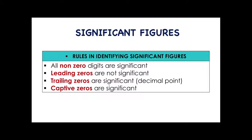Next, trailing zeros are significant. When we say trailing zeros, these are zeros after a non-zero digit. But take note: trailing zeros are significant only if the digits have a decimal point. If there is no decimal point, then that trailing zero is not a significant digit. And lastly, captive zeros are significant. When we say captive zeros, those are zeros that are in between non-zero digits.